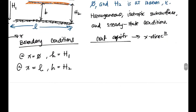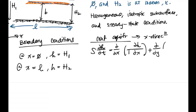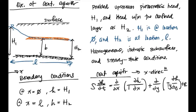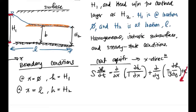The full equation is S(dH/dt) = d/dx[T(dH/dx)] + d/dy[T(dH/dy)] + R. We have no recharge, no flow in the Y direction, and since we have steady state conditions, dH/dt goes to zero. So all those terms drop out.